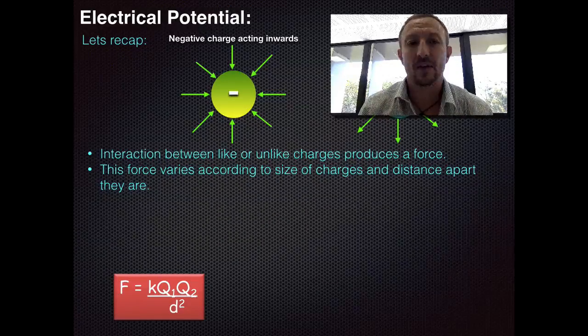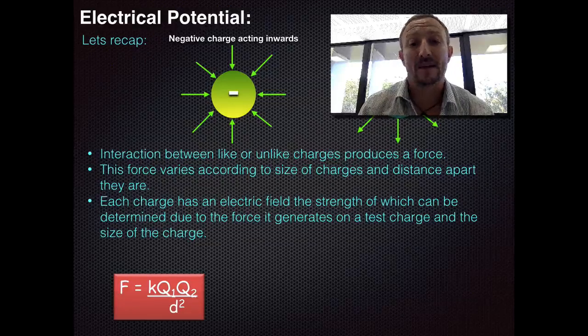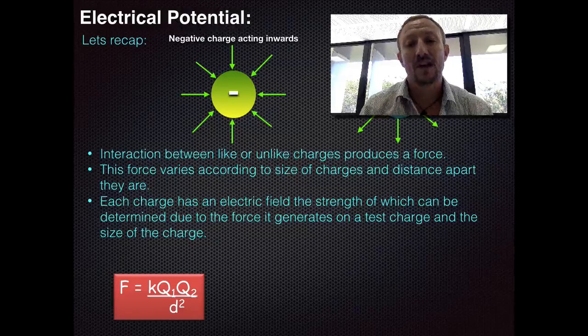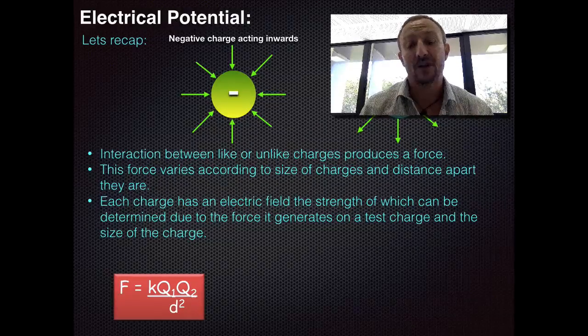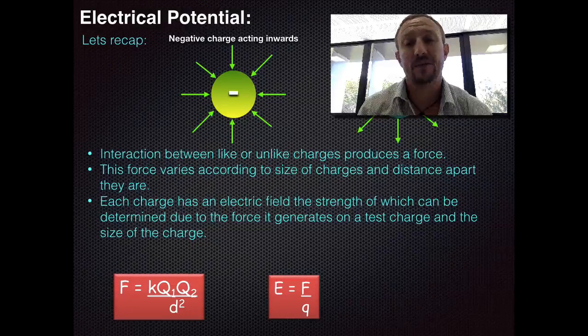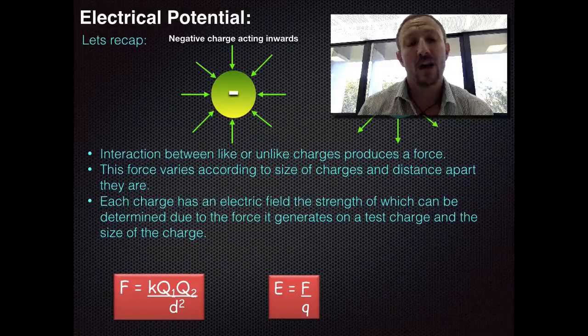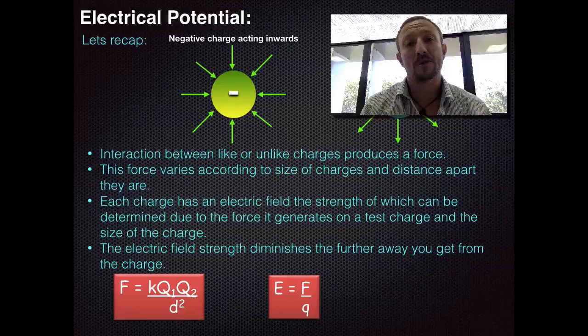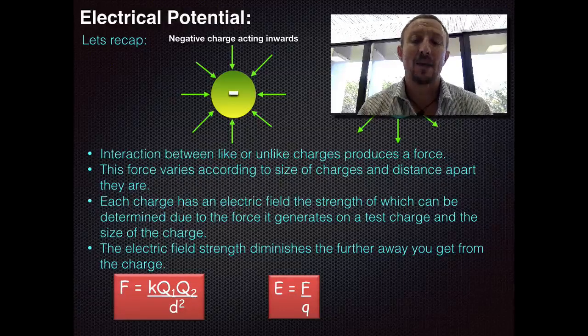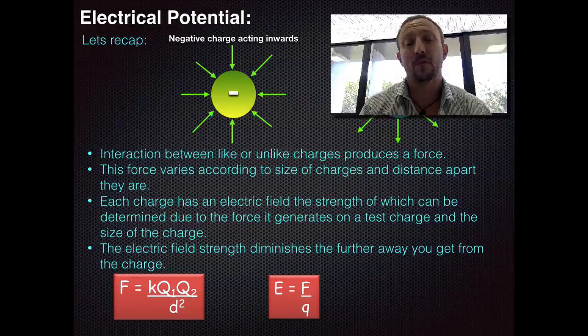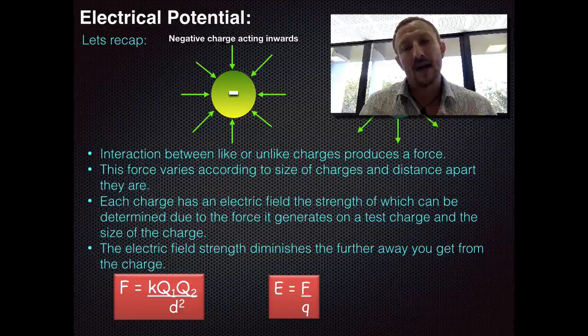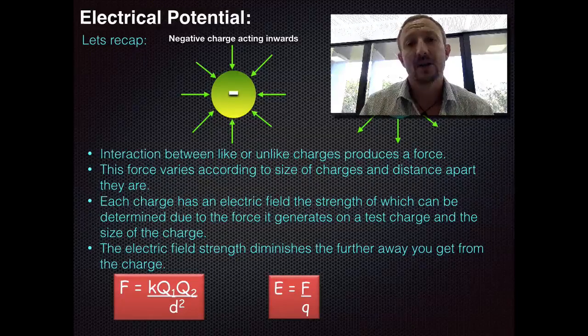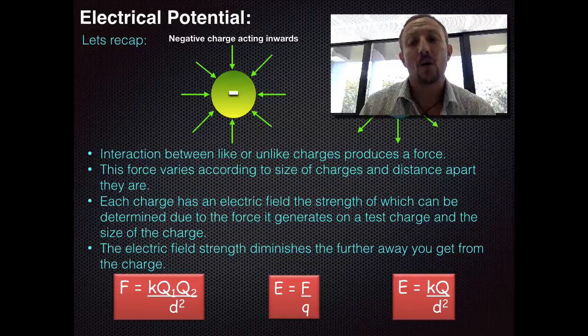We also know that the electric field strength will basically vary according to the force and the size of a specific charge placed in that field. Hence we get the electric field strength equals the force divided by the charge or the test charge. The electric field strength also diminishes the further away we get from a charge which incorporates this inverse square law. So the further we get away from the center of the charge the electric field lines begin to diminish and as a result we get E equals KQ all over D squared.